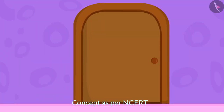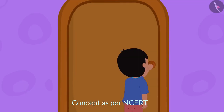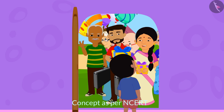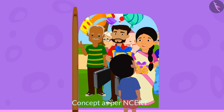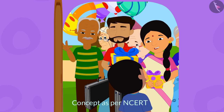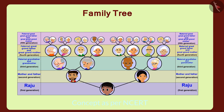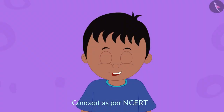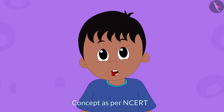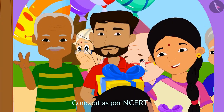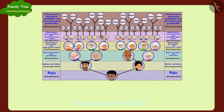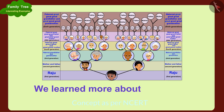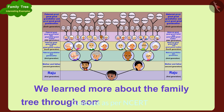Just then, Raju's doorbell rang. When Raju opened the door, he saw that the relatives whom he had till now only seen in that family tree were now in front of his eyes and had come to celebrate his birthday. Children, in this video we learned more about the family tree through some interesting examples.